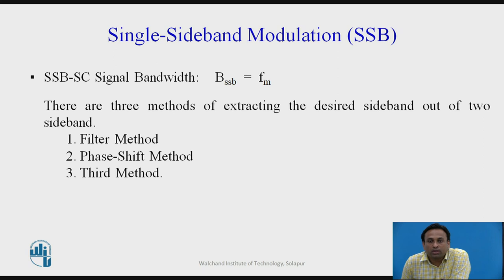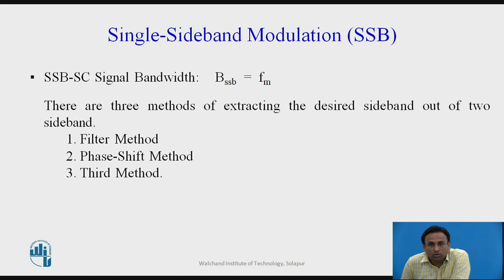Comparing bandwidth: for an SSB signal only FM bandwidth is required, whereas for a DSBSC signal or full AM signal, 2FM is required. So the bandwidth requirement is reduced to only FM — whatever FM is, that much bandwidth is needed to transmit an SSB SC signal.